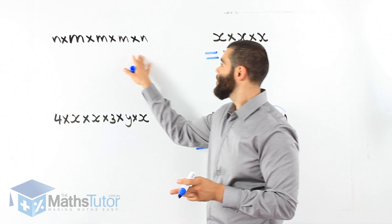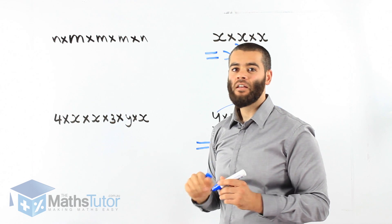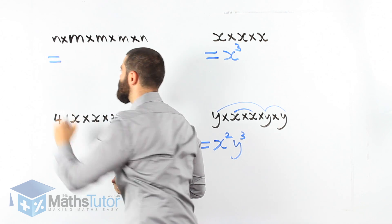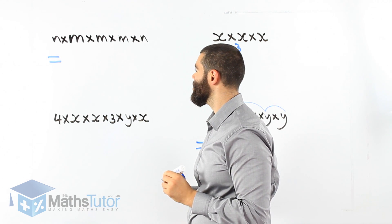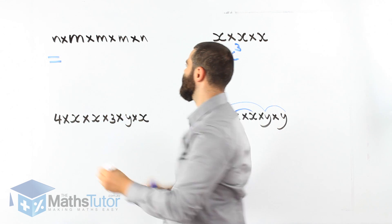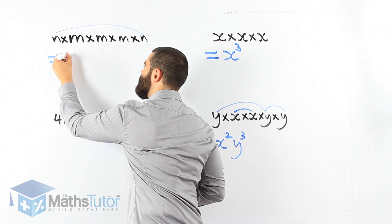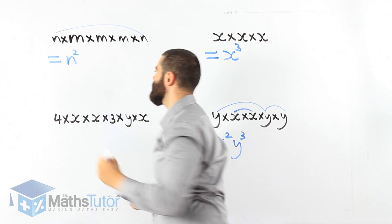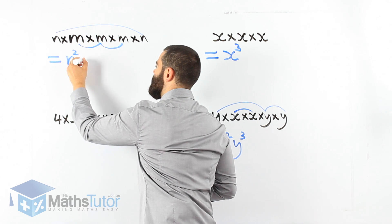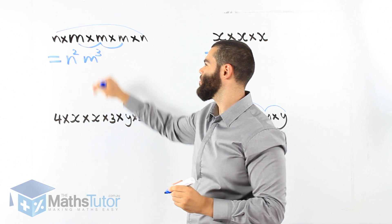Let's do another one. We have n times m times m times m times n. Again, it's a long algebraic expression and we want to make it shorter and simpler. Starting with n: is there another n? Yes, n times n — n to the power of 2, n squared. Now m: m times m times m — m to the power of 3. So the answer is n squared times m cubed — n to the power of 2, m to the power of 3, with an invisible multiplication in the middle.